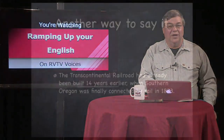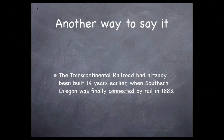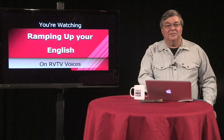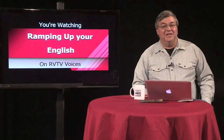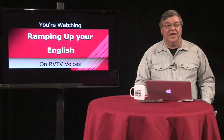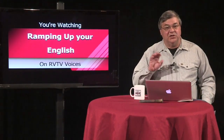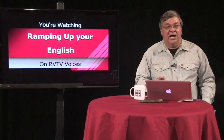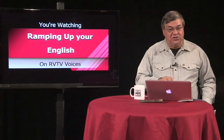Let's look at another way of saying the same thing: the Transcontinental Railroad had already been built 14 years earlier when Southern Oregon was finally connected to the rail in 1883. To continue — when communicating about events in the past, it's often necessary to use language for the function of fixing two or more events in time while showing a relationship between the two.